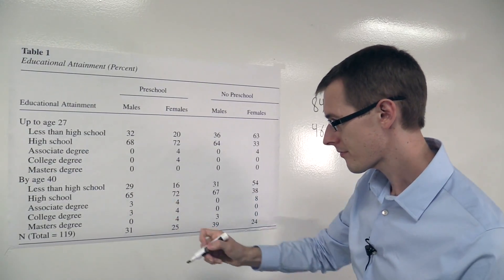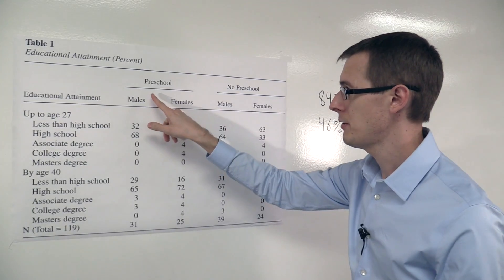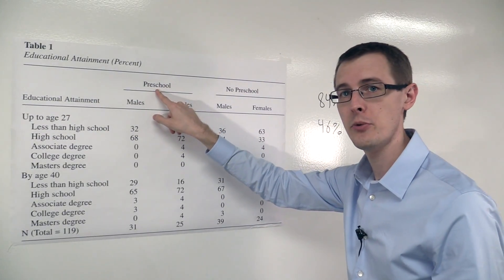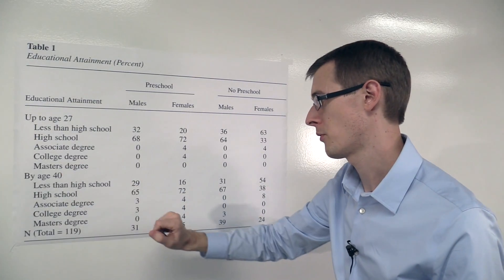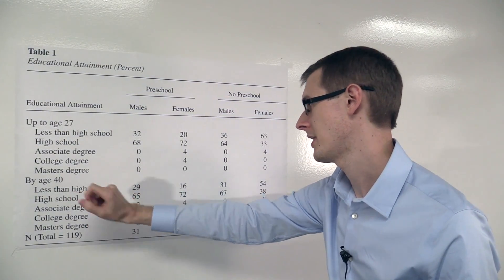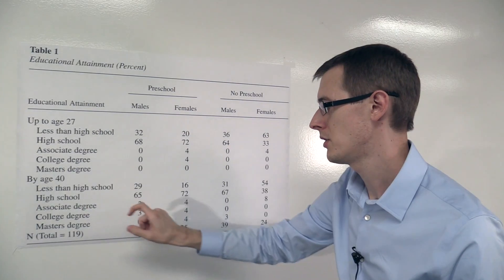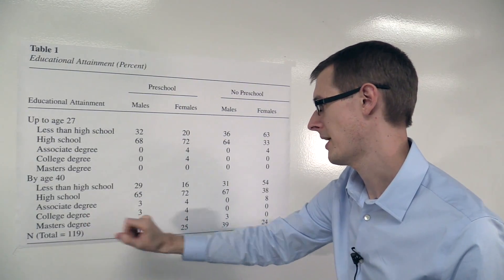Over here we see males who got treated, who went to preschool. 29% had less than high school education by age 40, 65% had a high school education by age 40, 3% associate, 3% college, 0% master's.